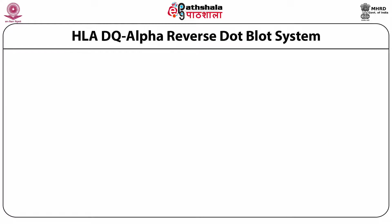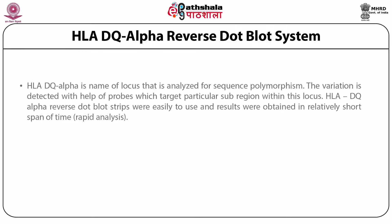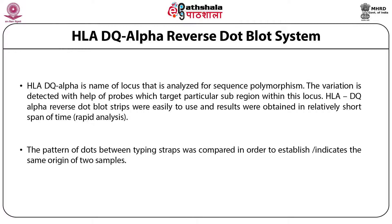The HLA-DQ-alpha reverse dot-blot system is the name of a locus analyzed for sequence polymorphism. The variation is detected with the help of probes which target a particular sub-region within this locus. HLA-DQ-alpha reverse dot-blot strips were easy to use and results were obtained in a relatively short span of time. The pattern of dots between typing strips was compared to indicate the same origin of two samples.